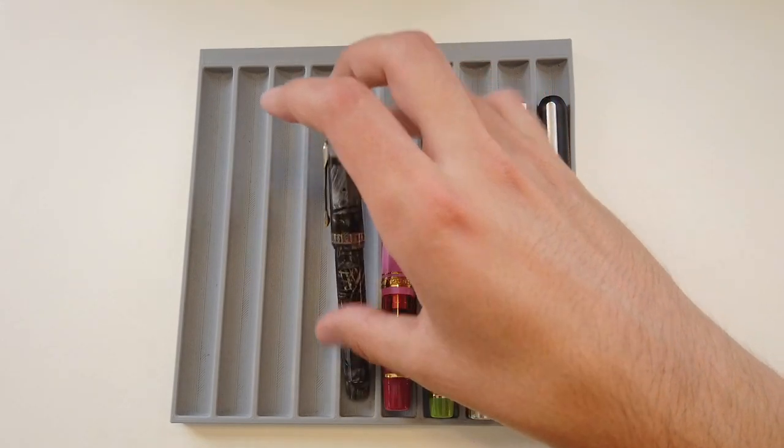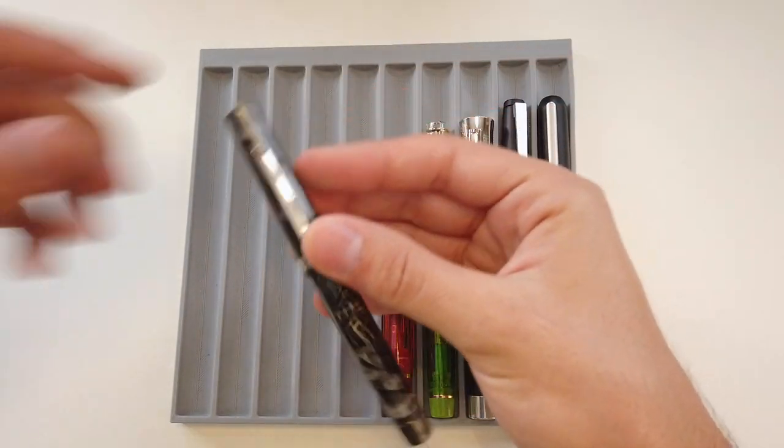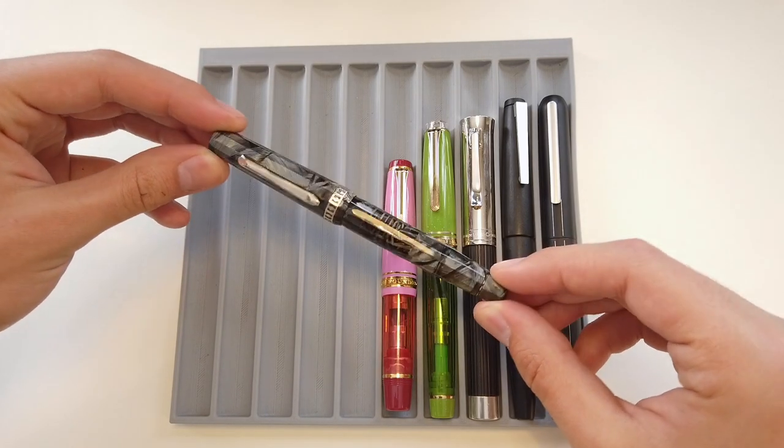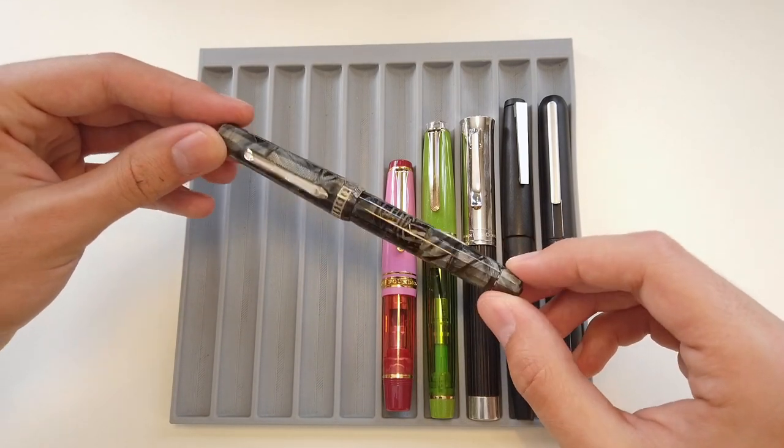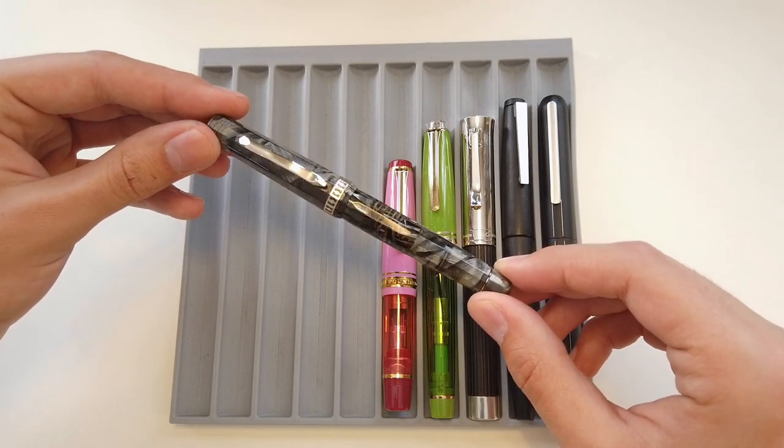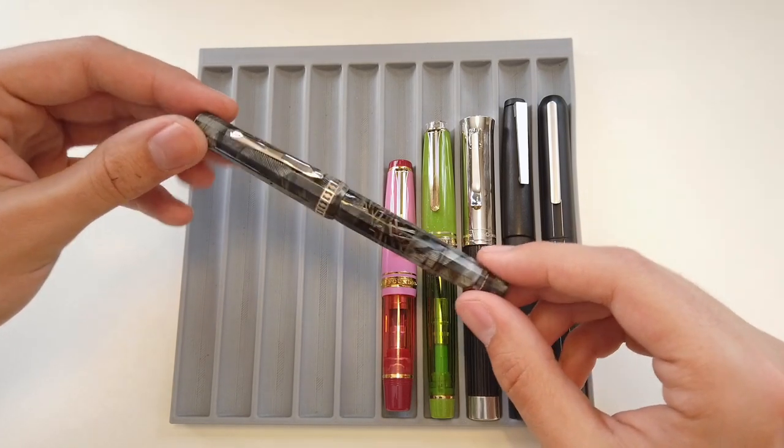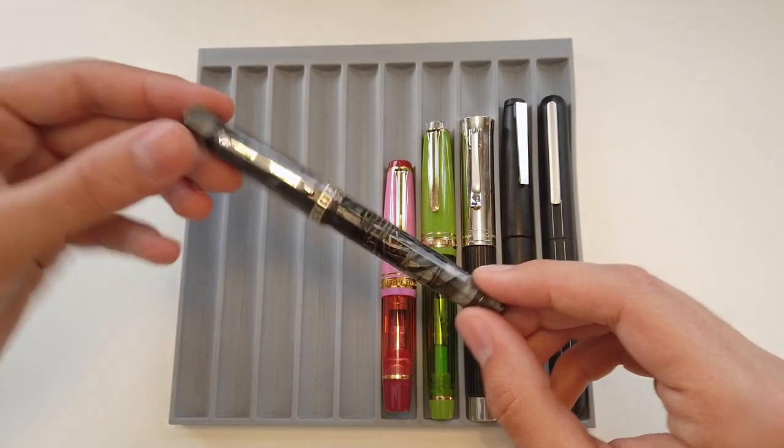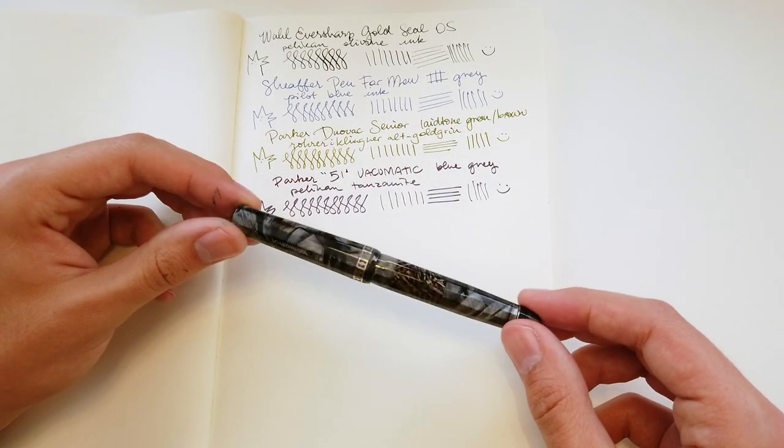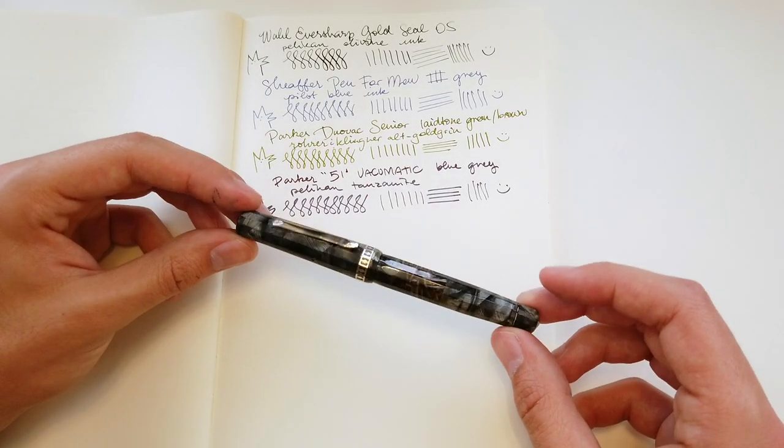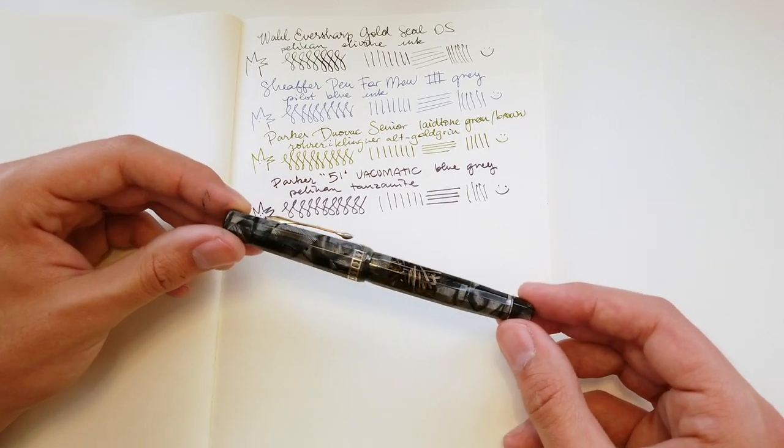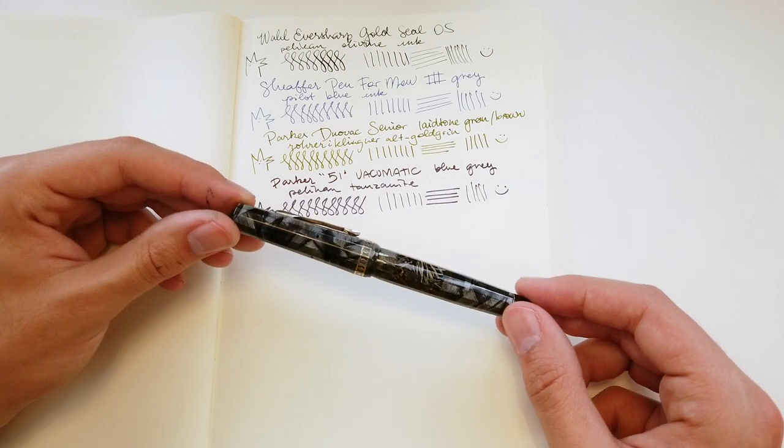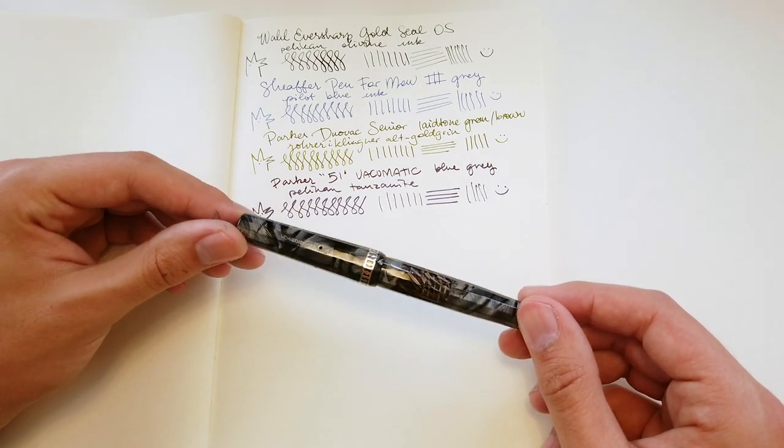For the last of the vintage pens, this is the beautiful Wall Eversharp Doric that I got at the San Francisco Pen Show last year, in the gray shell second generation finish, which means it's a vacuum filler but it is not a gold seal model. Another vintage pen and our final one for this list, the Wall Eversharp Doric was a pen that I wanted for a very long time. I found one at a reasonable price, had it restored, and now it will live with me until I die.